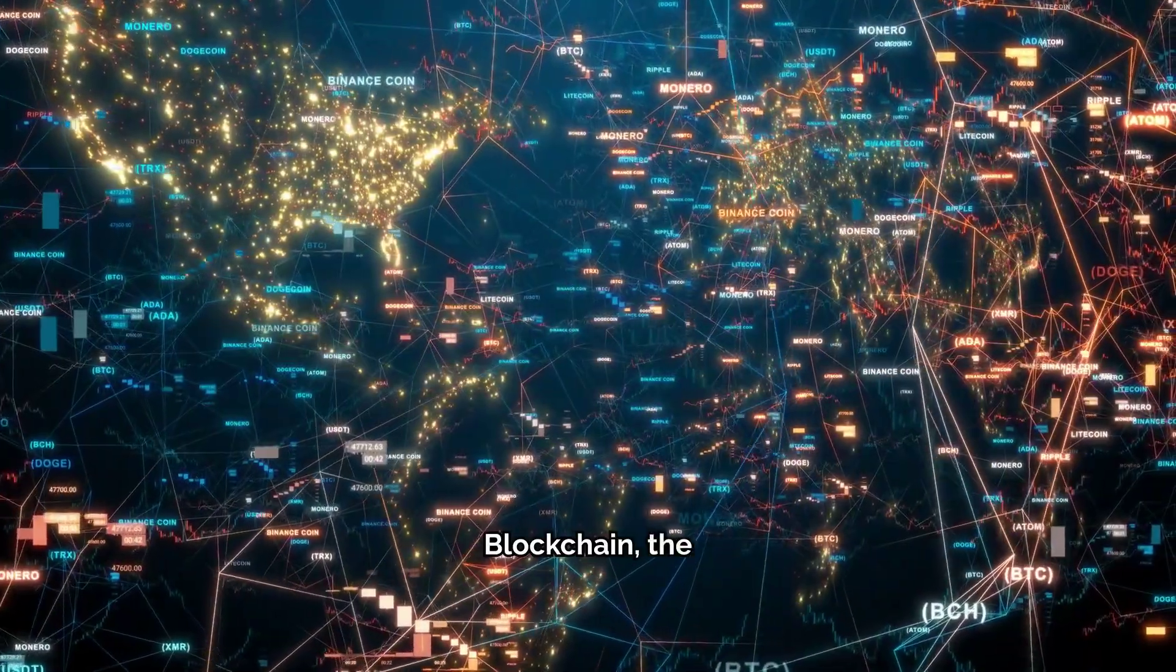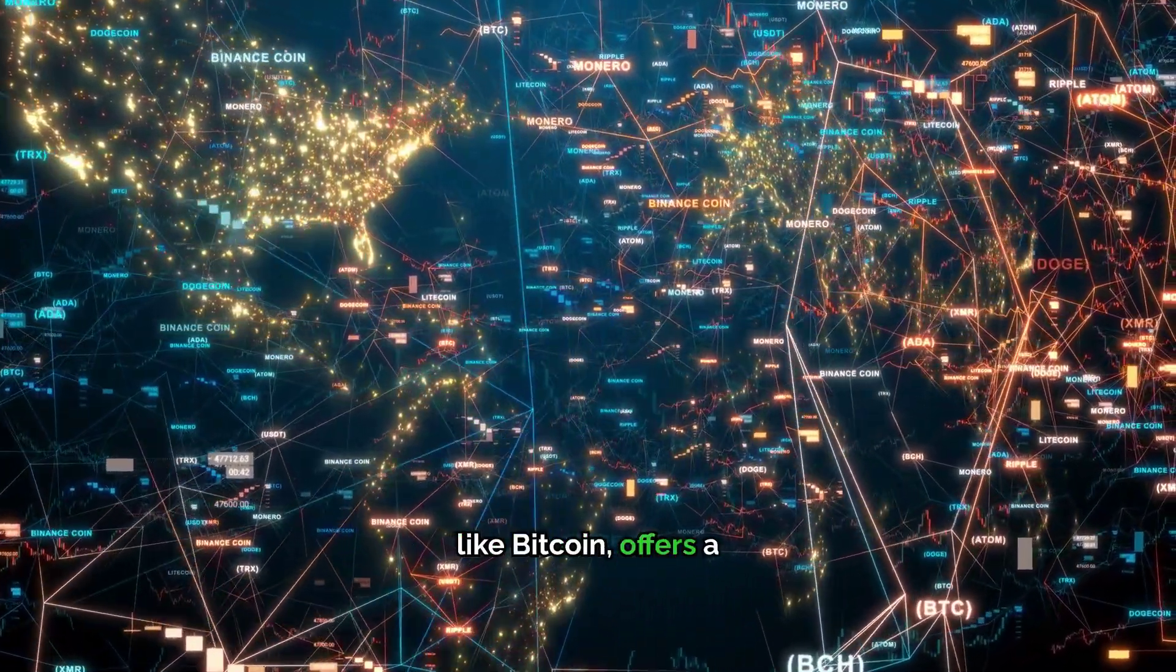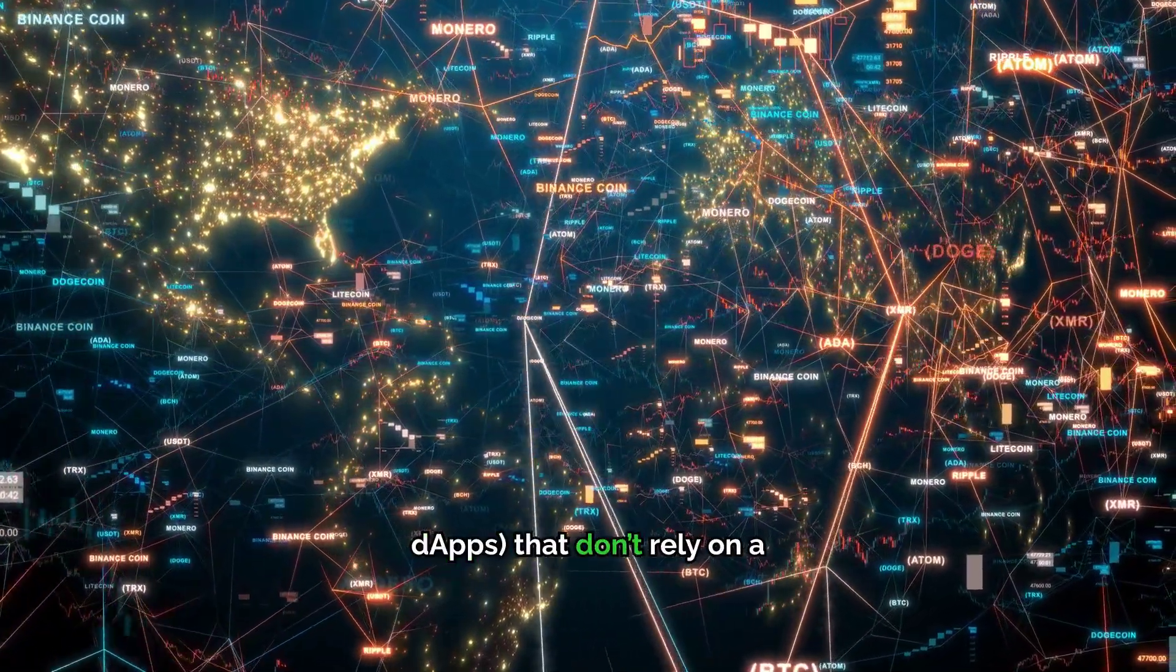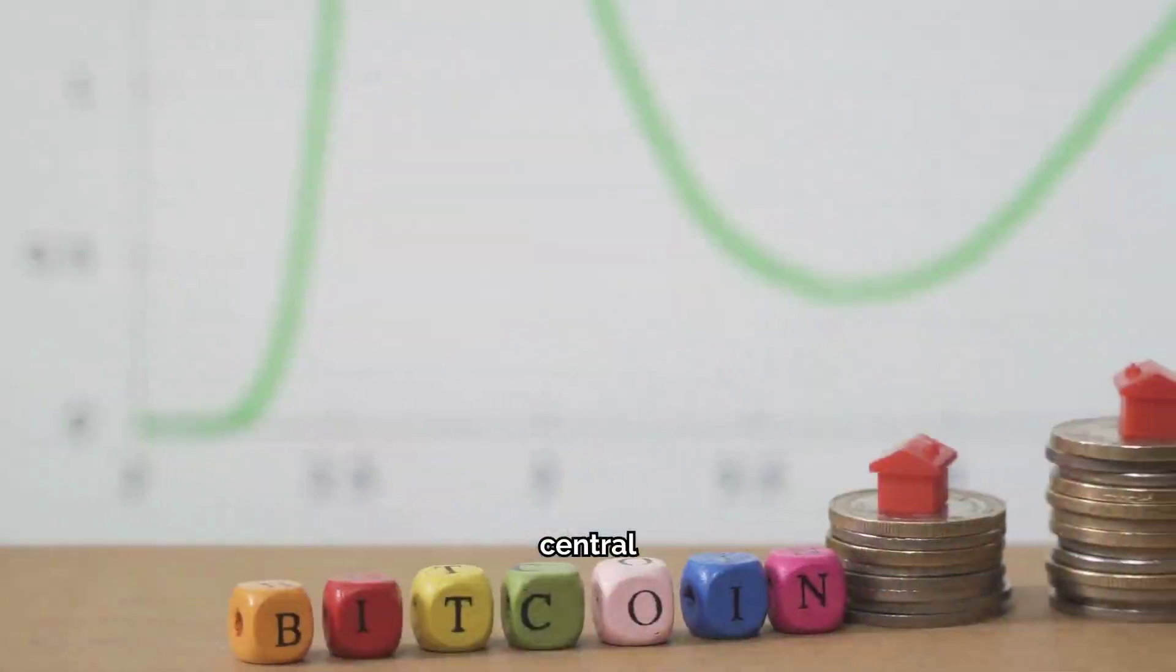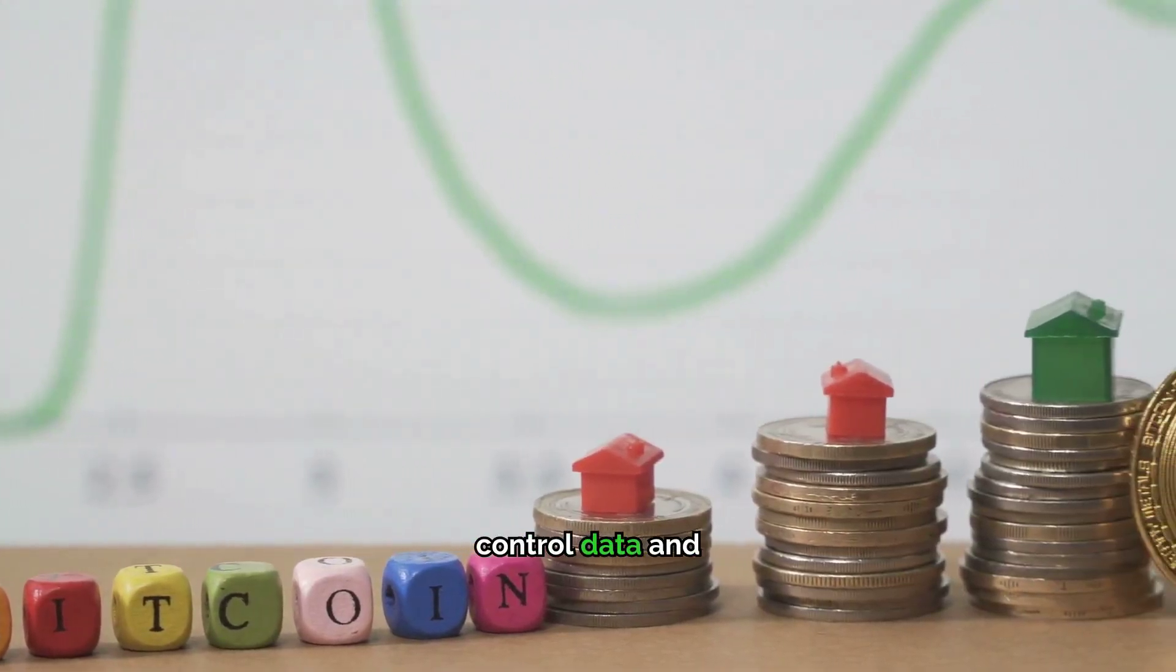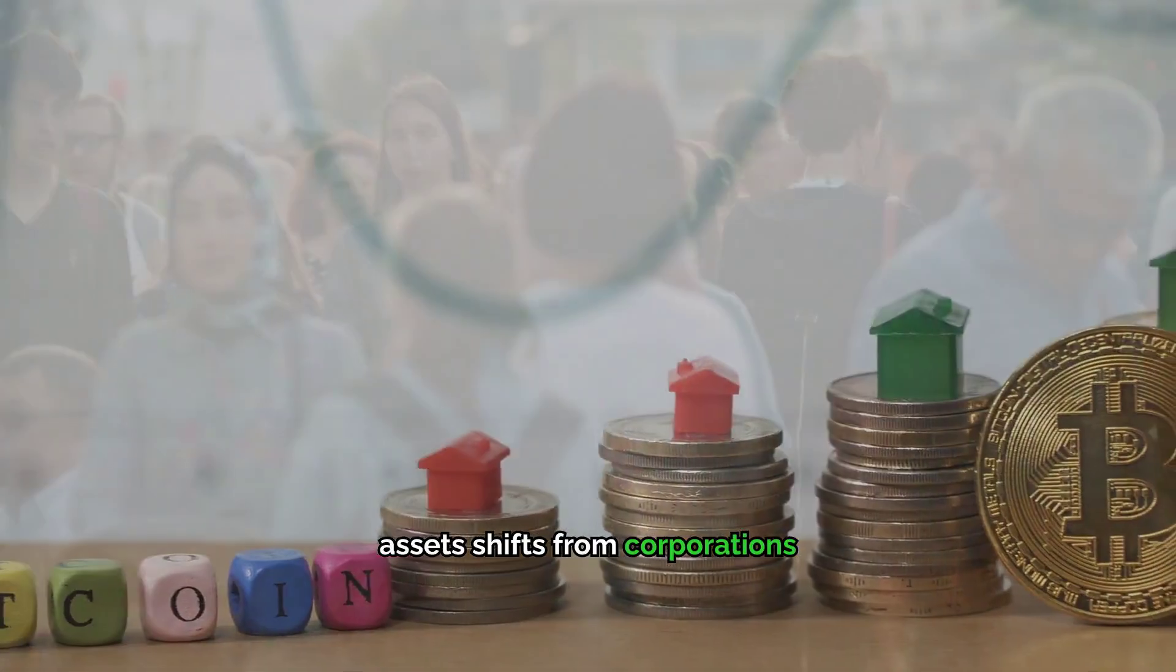Blockchain, the technology behind cryptocurrencies like Bitcoin, offers a way to create decentralized applications, or dApps, that don't rely on a central authority. With Web 3.0, the power to control data and assets shifts from corporations to individuals.